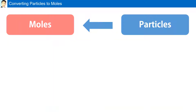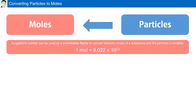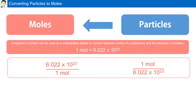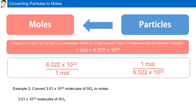Converting from particles to moles. We can use the equality 1 mole = 6.022×10²³ to create two conversion factors. In this example, we are asked to convert 3.01×10²⁴ molecules of SO2 to moles. Selecting the second conversion factor — 1 mole over 6.022×10²³ — we get 5 moles of SO2. So in 3.01×10²⁴ molecules of SO2, there are 5 moles present.